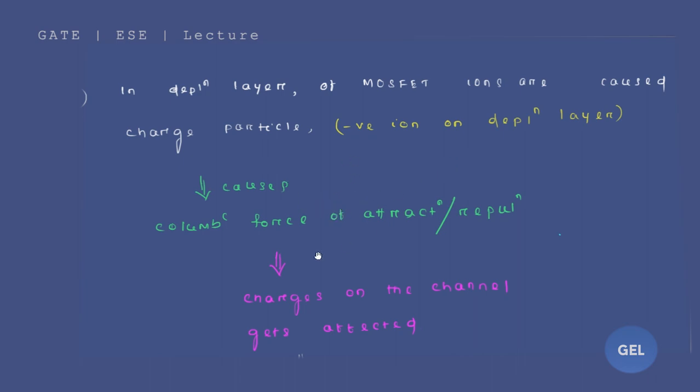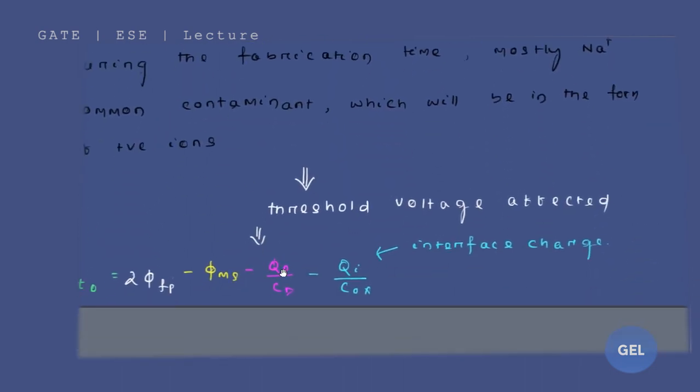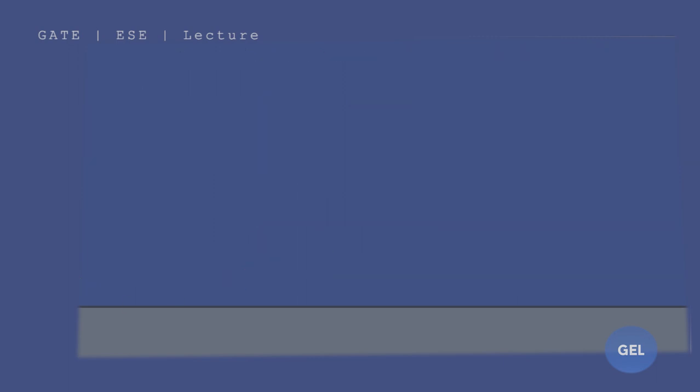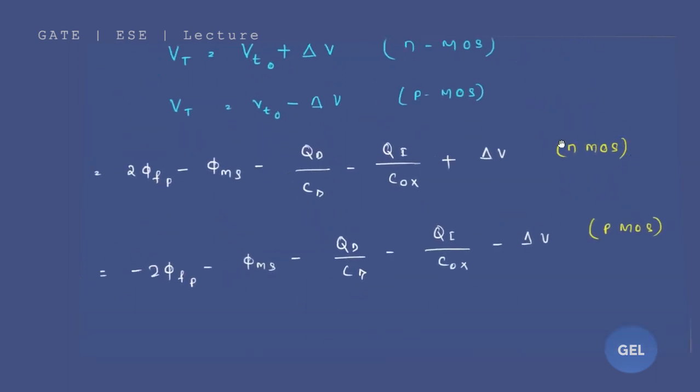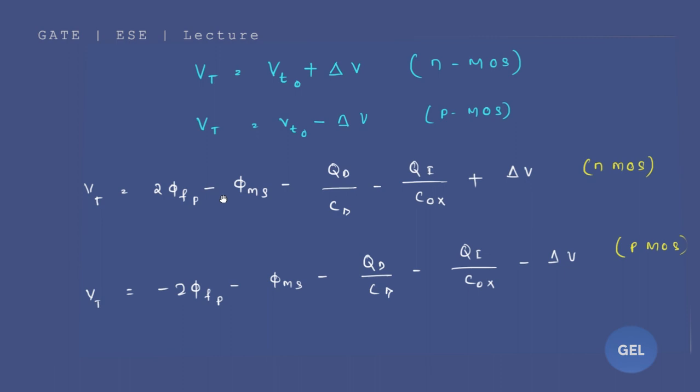The ions in the depletion layer, due to that the charge particles which got formed, the columbic force of attraction and repulsion that formed due to those charge particles. To overcome we are going to add this term. And here minus Qi by Cox, this term is to avoid the interface charge.